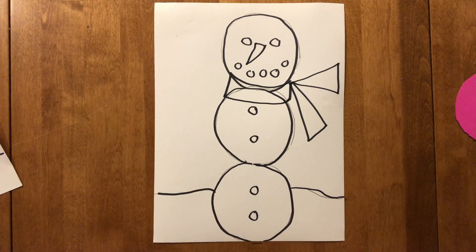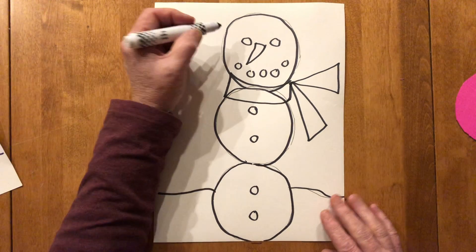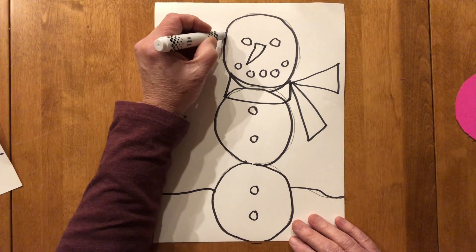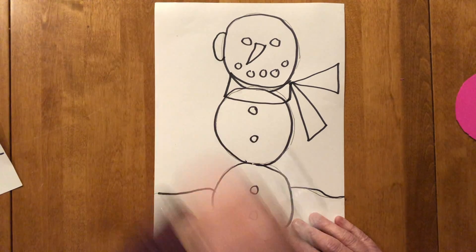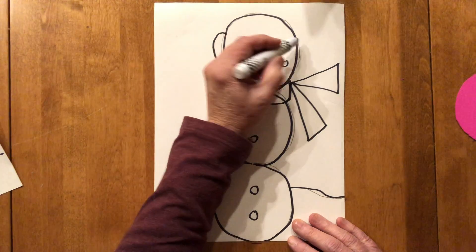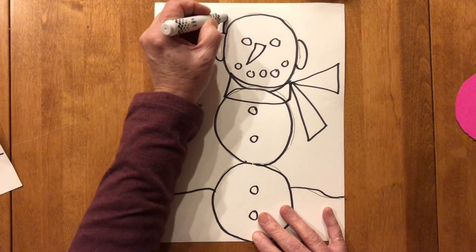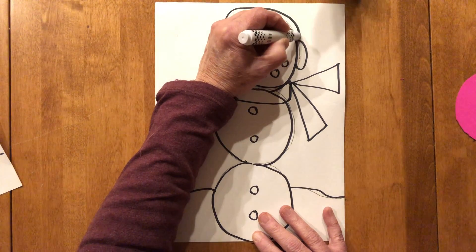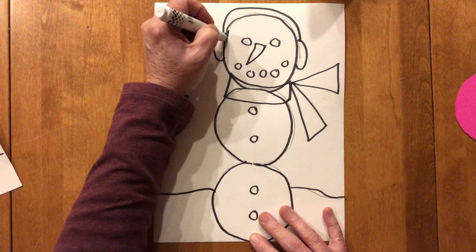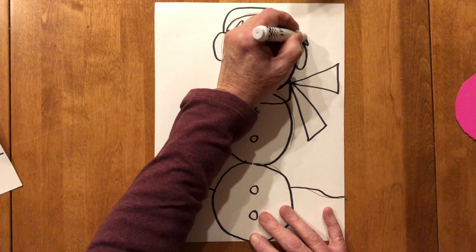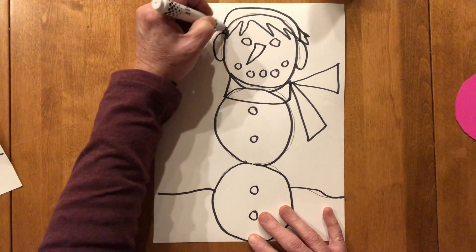Okay, then think about do you want to do earmuffs or do you want to put a hat on your snow person? I'm going to do earmuffs for this one. So I'm going to draw a half a circle there and a half a circle here and then I'm going to draw a band coming up over and down but his hair is going to be sticking out a little bit from his earmuffs.